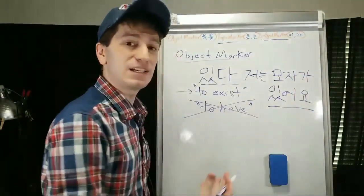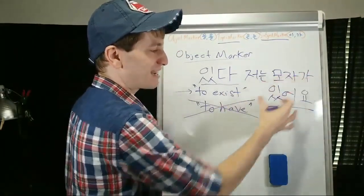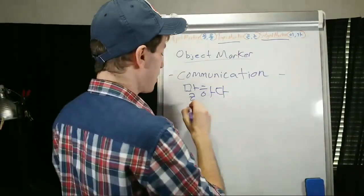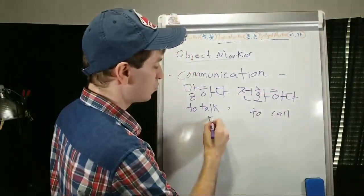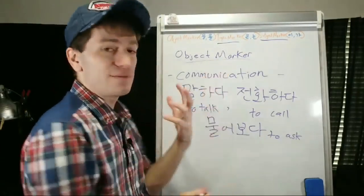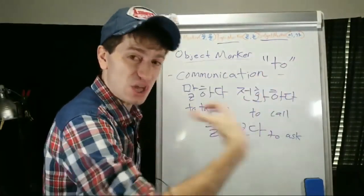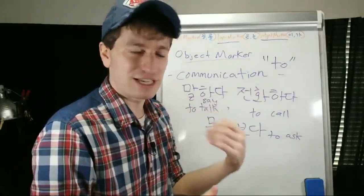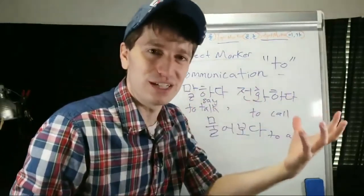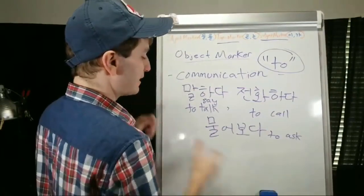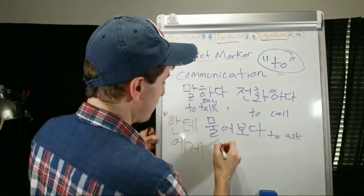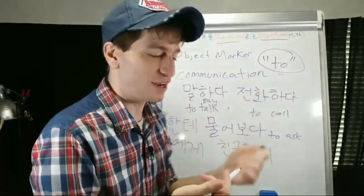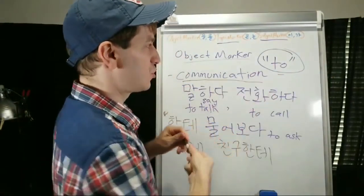There are exceptions. Some verbs that have to do with communicating — for example, 말하다 (to speak/talk), 전화하다 (to call), and 물어보다 (to ask) — are not used with the object marker, even though it seems like they would be. They say 'to call TO someone,' not 'call someone.' You use 에게 or 한테 (meaning 'to') to mark the person. The more common one is 한테. For example: 친구한테 말해주세요 — 'Please tell your friend.' Anything that has to do with communication, use 'to' and not the object marker.